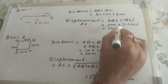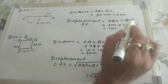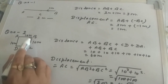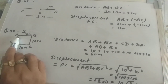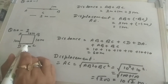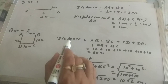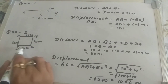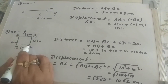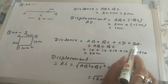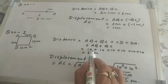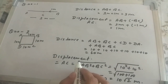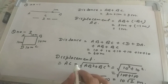Problem 2: a body moves on a square path with each side 10 meters. It starts from A and after completing one and a half rounds, what are the distance and displacement? Distance equals the total path length for one and a half rounds: AB + BC + CD + DA + AB + BC, which is 10 + 10 + 10 + 10 + 10 + 10, giving 60 meters.